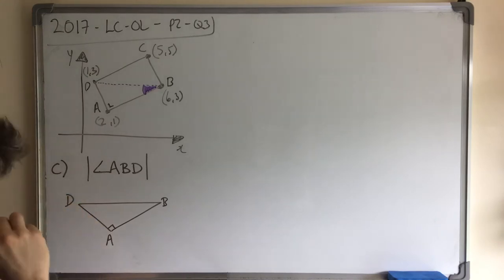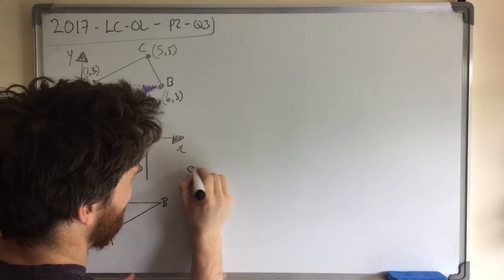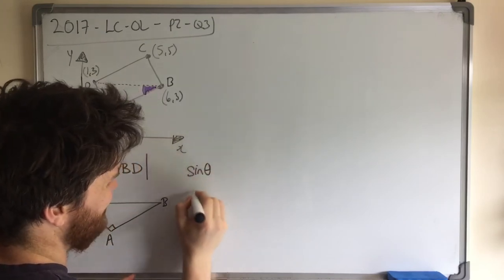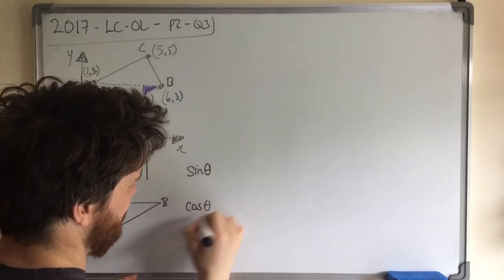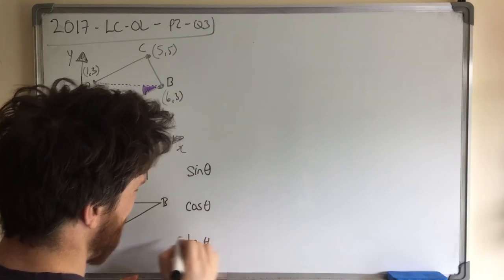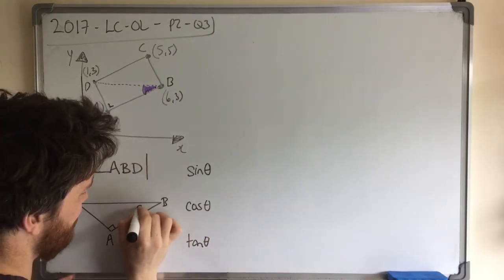And when we have a right angle triangle and we're talking about angles, we need to think about three rules in particular. Sine Theta, Cosine Theta and Tan Theta. And Theta being this angle here, the one I want to find.